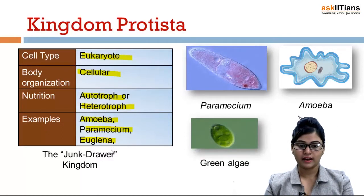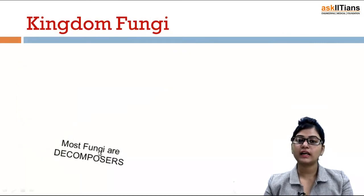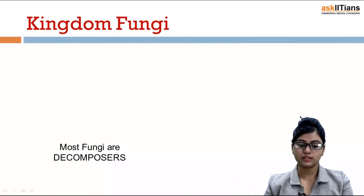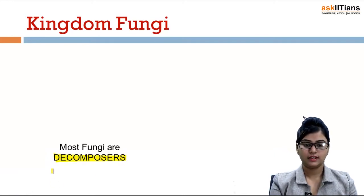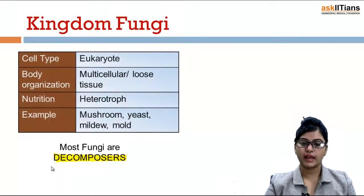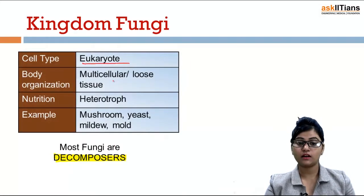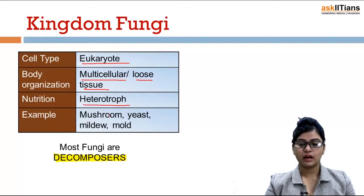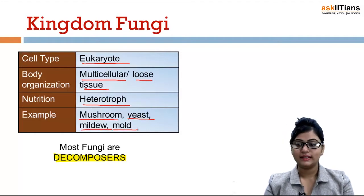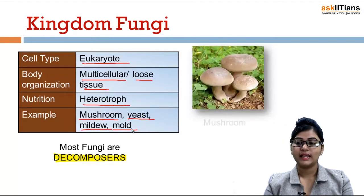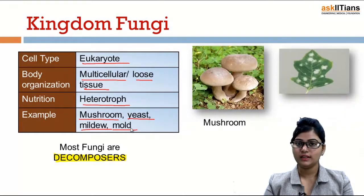Next is kingdom Fungi. Most fungi are decomposers — just remember this. Cell type is eukaryote, body organization is multicellular or loose tissue, and nutrition is heterotroph. Examples include mushroom, yeast, mildew, and mold. This is a mushroom, and this is mildew on a leaf.